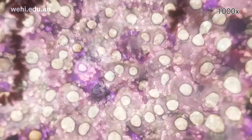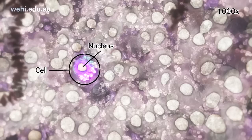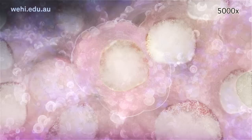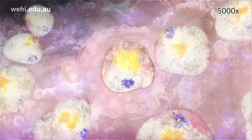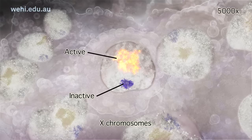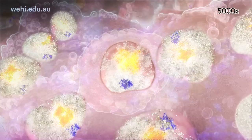We are now looking at cells from a female body. A full copy of the genome is found in the nucleus of every cell, and each cell has the same 23 pairs of chromosomes. We can now see individual X chromosomes. Highlighted here are two X chromosomes from one cell. The inactive X is compact in appearance, whereas the active X occupies a much greater volume, despite the two chromosomes having the same gene content.